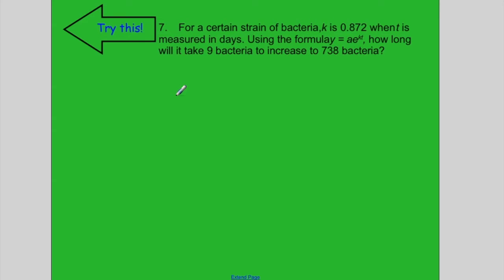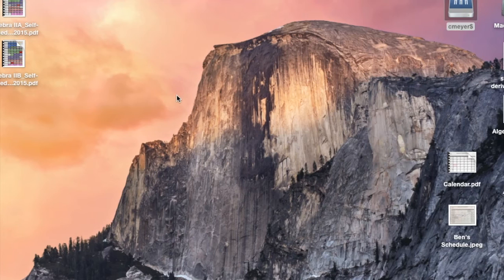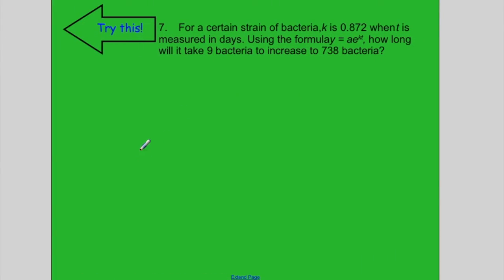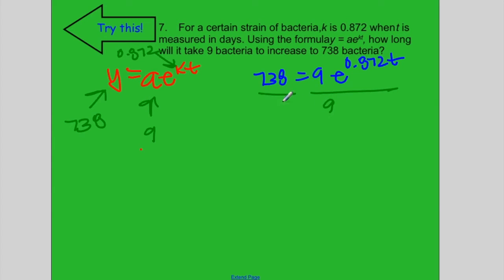Example 7. For a certain strain of bacteria, k is 0.872, when t is measured in days. Using the formula y equals ae to the kt, how long will it take 9 bacteria to increase to 738 bacteria? We are starting with 9 bacteria, and they are increasing to 738, and k is 0.872. So I will have 738 is equal to 9e to the 0.872t. To solve, got to get e by itself, so divide both sides by 9. 738 divided by 9 is 82 equals e to the 0.872t.